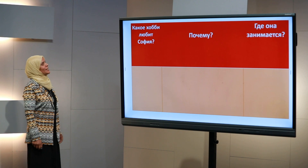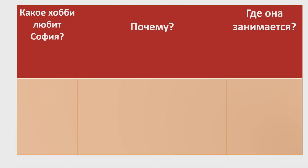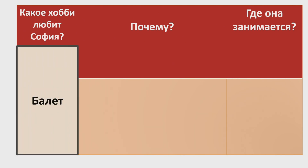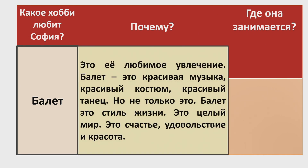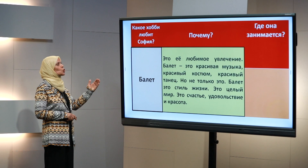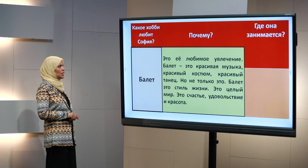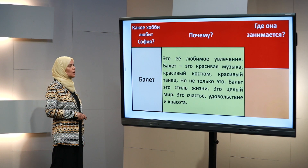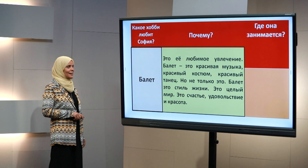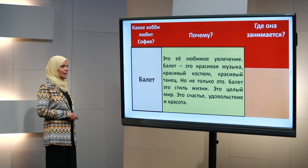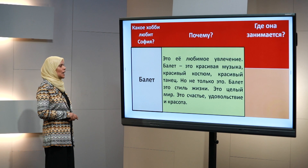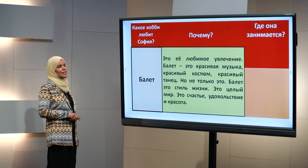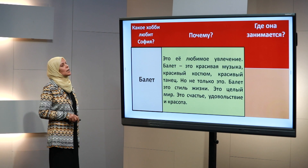Давайте сейчас ответить на несколько вопросов. Какое хобби любит София? София любит балет. Почему она любит балет? Что она сказала о балете? Она сказала, что это её любимое увлечение, что балет — это красивая музыка, красивый костюм, красивый танец. Но не только это: балет — это стиль жизни, это целый мир, это счастье, удовольствие и красота. Где она занимается балетом? В балетной школе.